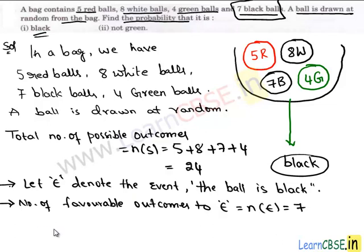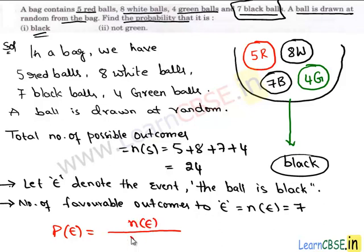Now we can find the probability of event E. The probability that the drawn ball is black is equal to the ratio of the number of favorable outcomes to E, n(E), to the total number of outcomes, n(S). Here we have favorable cases seven and total outcomes 24. So the probability that the drawn ball is black is seven upon 24.